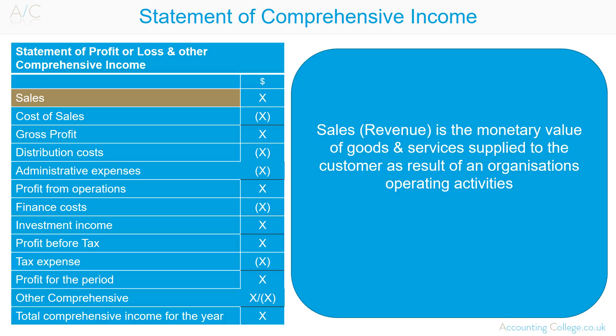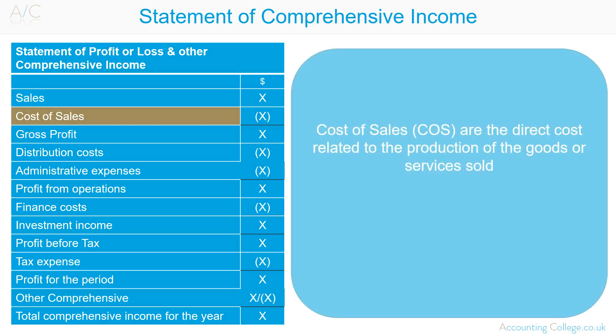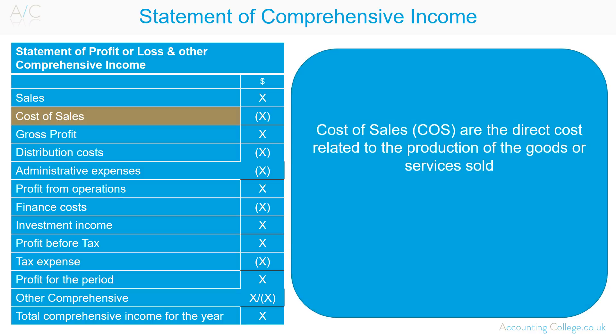You then subtract cost of sales. These are the direct costs relating to the production of goods or services sold. Direct costs include the cost of materials used in creating the good, along with the direct labour costs used to produce the good. It excludes indirect expenses such as distribution and sales costs.